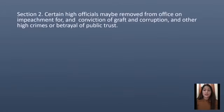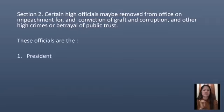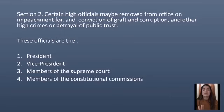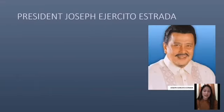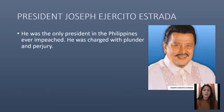Under Section 2, certain high officials may be removed from office through impeachment for and conviction of graft and corruption and other high crimes or betrayal of public trust. These officials include the President, Vice President, members of the Supreme Court, members of the Constitutional Commissions, and the Ombudsman. Former President Joseph Ejercito Estrada was the only president in the Philippines to be impeached; he was charged with plunder and perjury.